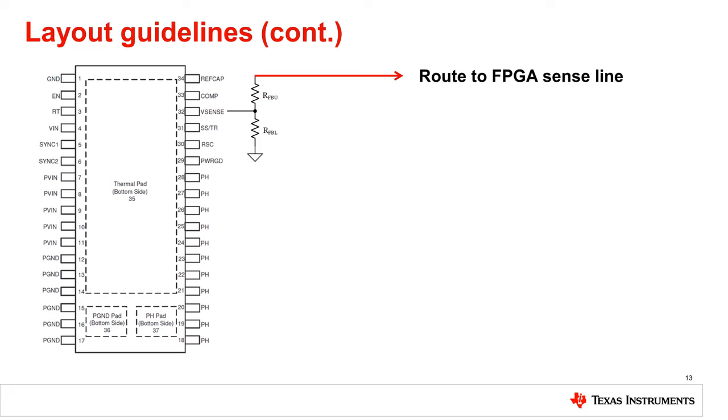This can be expanded for situations where the device the rail is powering is very far away. Routing the top of the resistor divider to the positive rail of the device can be beneficial, but care has to be taken to avoid any noisy regions of the layout as it is a sensitive signal.